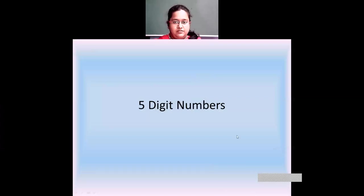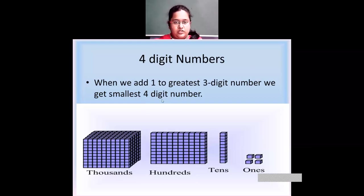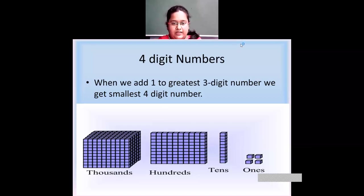The new chapter is five digit numbers. To do a quick revision on four digit numbers: you know that when you add one to the greatest three digit number, we get the smallest four digit number. The greatest three digit number is 999, so when I add one to 999, I get the smallest four digit number, which is 1000. And the greatest four digit number will be 9999.